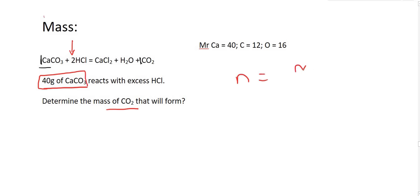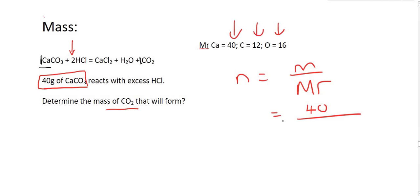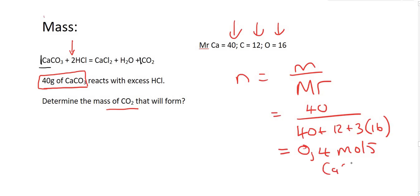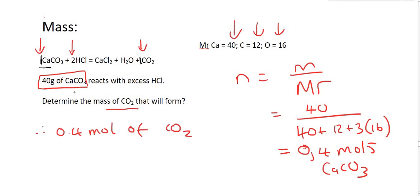We can get moles using n equals m over Mr, where the mass is 40 and Mr is the molar mass from the periodic table. Ca is 40, carbon is 12, and there are three oxygens so it's three times 16. If you work this out you get 0.4 moles of CaCO3. Now we can look at the ratio, which is 1 to 1, so therefore we will have 0.4 moles of CO2. Now they want the mass of CO2, so we use the n equals m over Mr formula again with n equal to 0.4 moles.